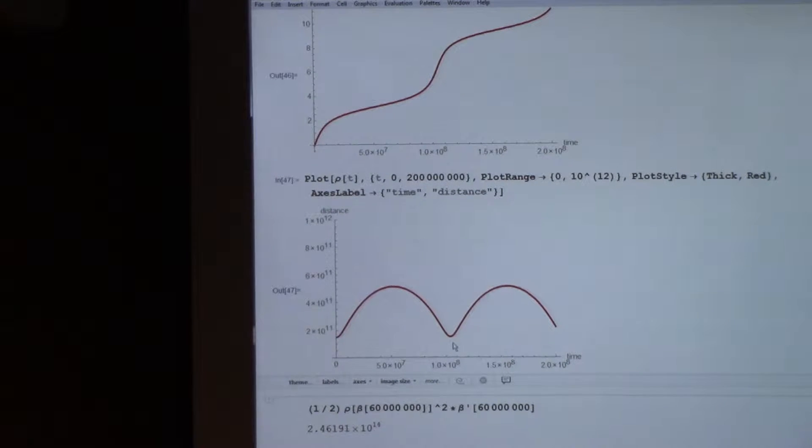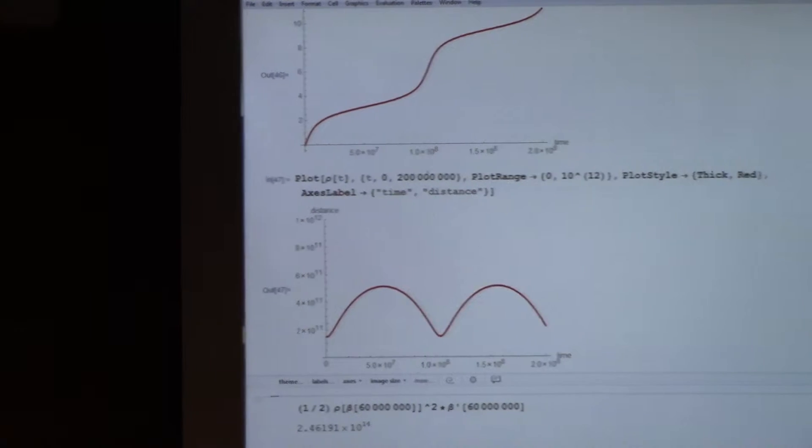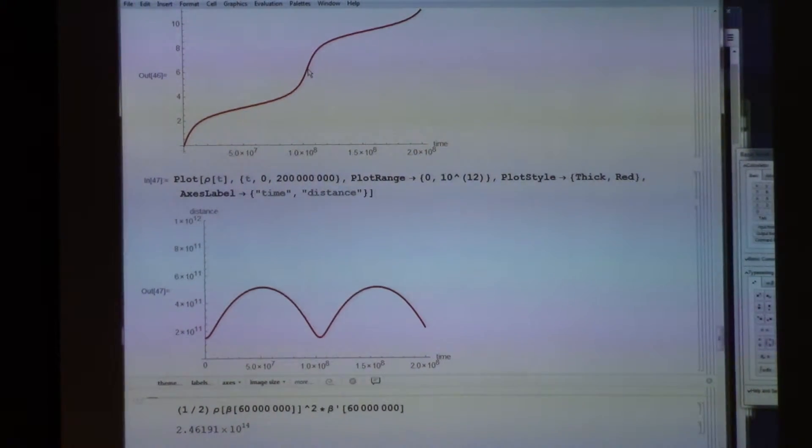And here are the distances. And you can see this is the perihelion right here, closest approach, where that's minimized. And that matches this inflection point there.